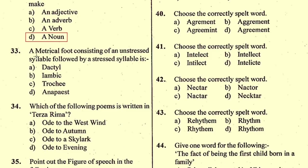Question number 33: A metrical foot consisting of an unstressed syllable followed by a stressed syllable is — the right option is B, iambic, which is a metrical foot consisting of an unstressed syllable followed by a stressed syllable.